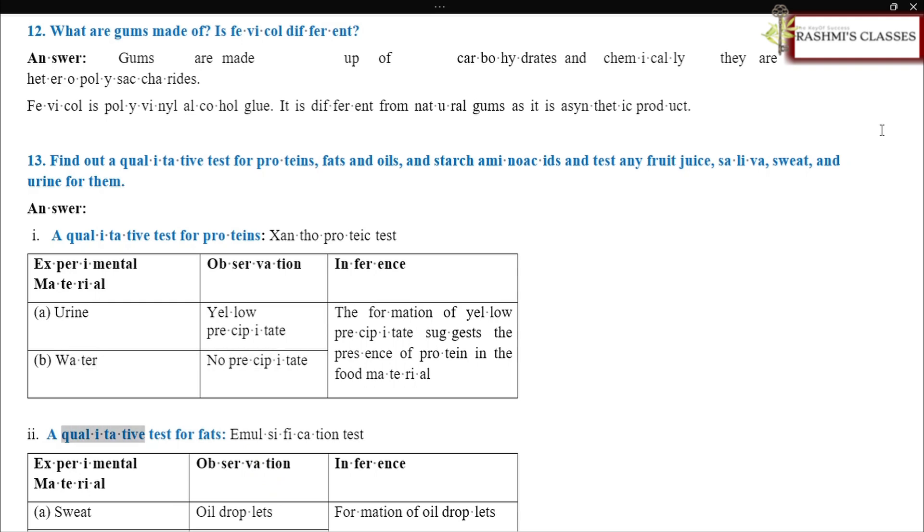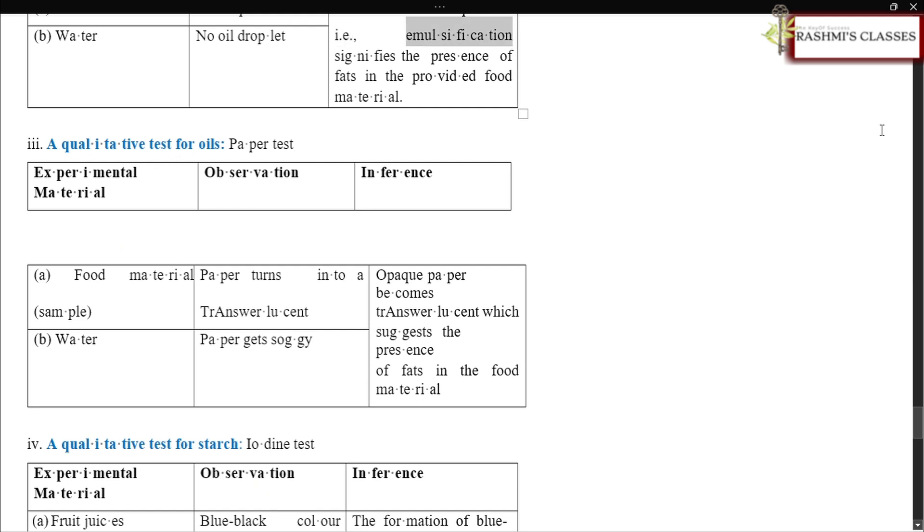A qualitative test for fats, emulsification test. Experimental material, observation, inference. Sweat, oil droplets. Formation of oil droplets, i.e. emulsification signifies the presence of fats in the provided food material. Water, no oil droplet.